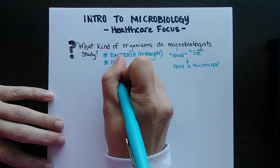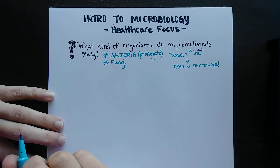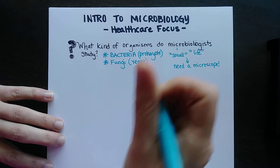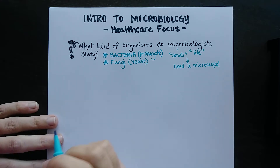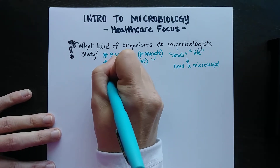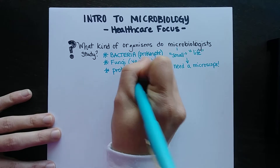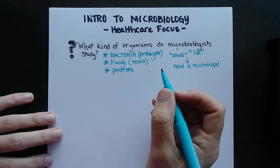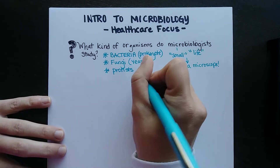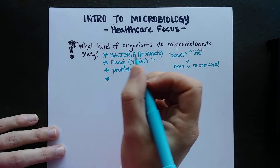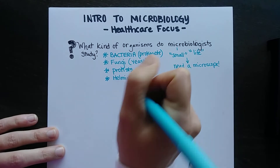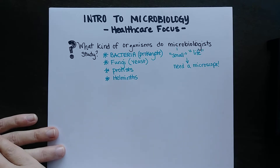All the rest of the organisms are eukaryotes. So you've got fungi, which can cause infection — like yeast infections, thrush, or candida, which are yeasts. Then protists can cause disease; these are single-celled organisms that are actually super varied. They are eukaryotes even though they're single-celled like bacteria.